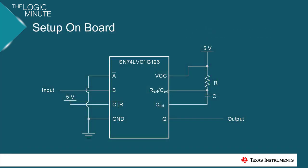So what would our setup onboard look like? Well, here we have our LVC1G123 device, and in the top left, we have our two inputs, A and B. If the input is tied to A, then it will be a falling edge trigger. If the input is tied to B, it'll be a rising edge trigger.